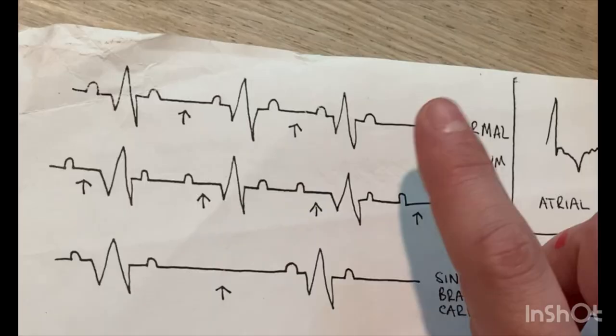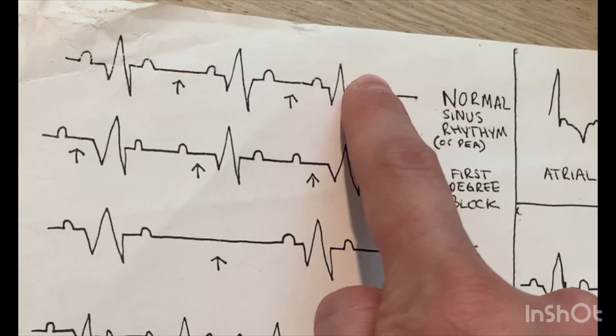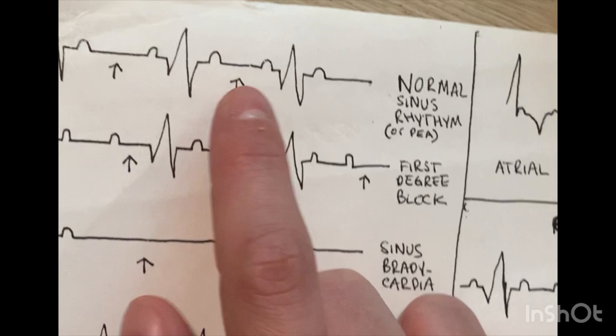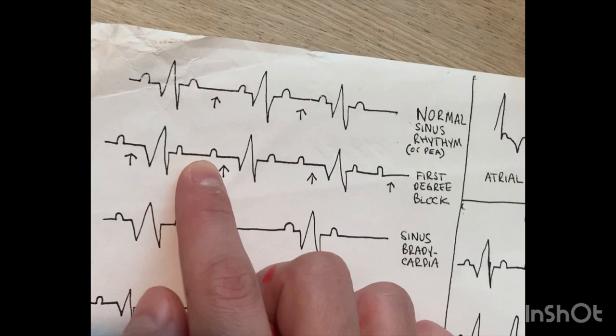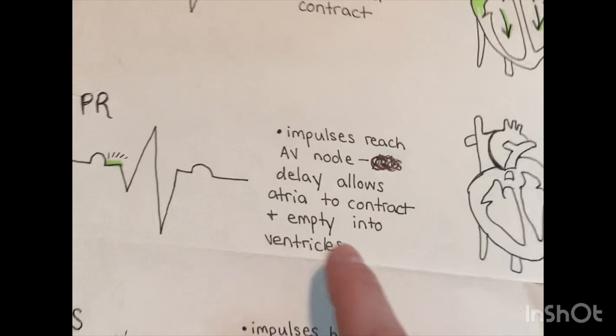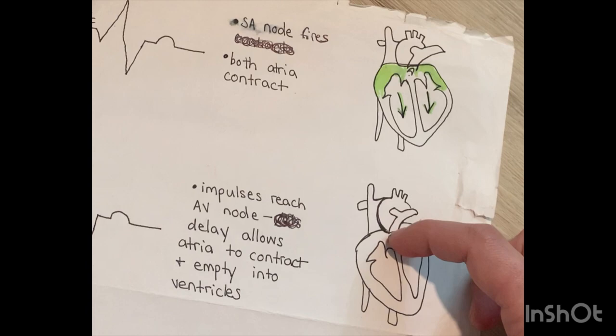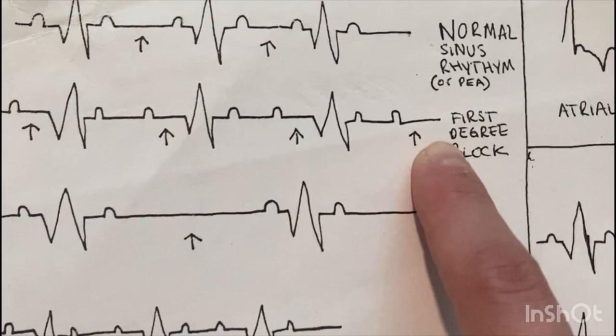Sinus rhythm just means originating from the sinoatrial node. In normal sinus rhythm, you'll have a slight gap in between your T-wave and your P-wave. In first degree block, there's going to be a larger gap between the P-wave and the QRS — the PR segment we talked about earlier. Someone might have a heart problem causing a delay from the sinoatrial node impulses reaching the AV node. Remember, the gap is after the P-wave.